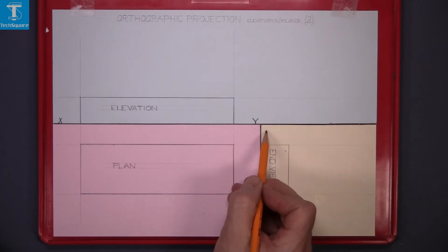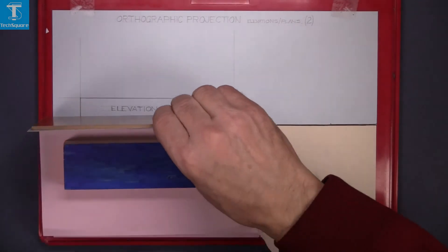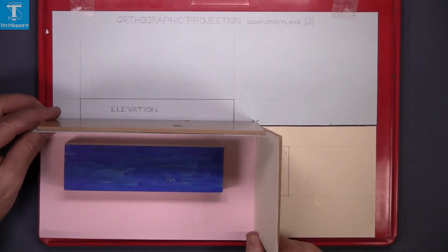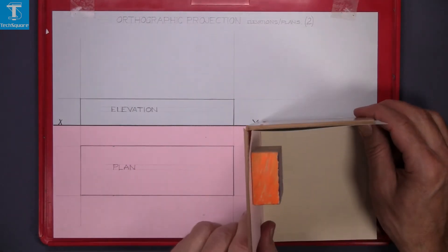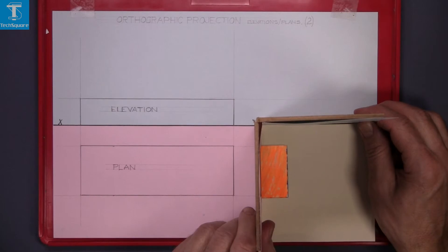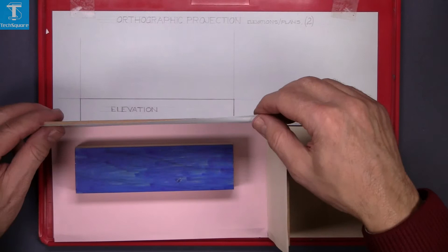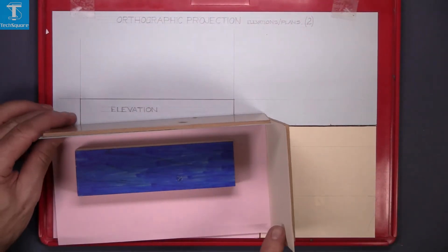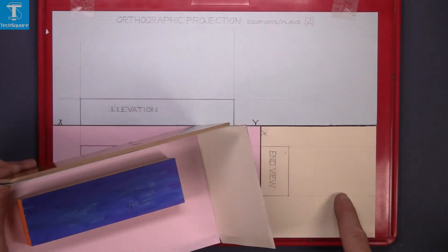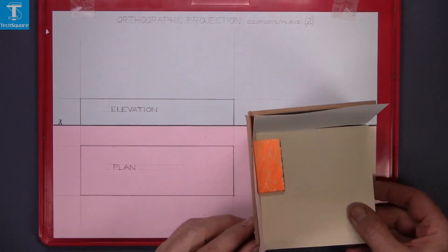Now this line here is the XY line as in the case of the elevation. Now this is how we got it. We're looking directly down at the piece here. We see the end view. And that's the plan there. And then the elevation here. This plane here, the yellow plane, is this plane here. And our view of this is like this.